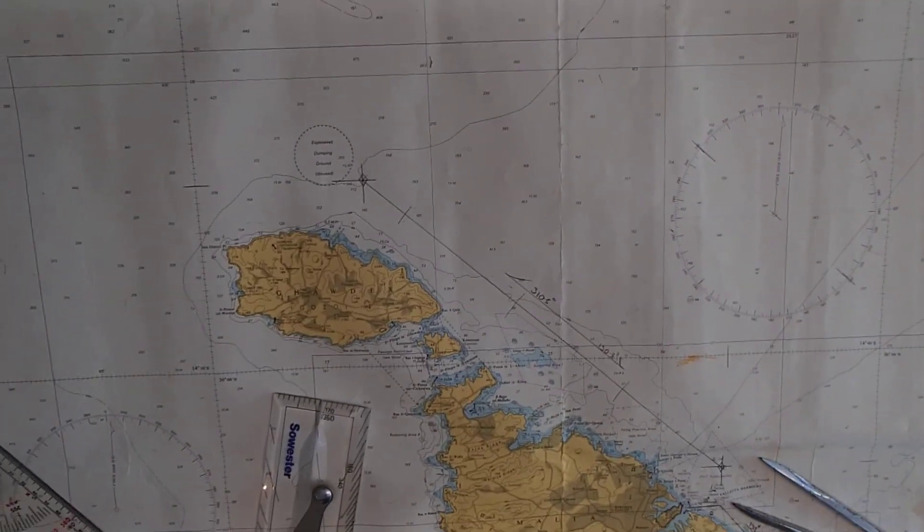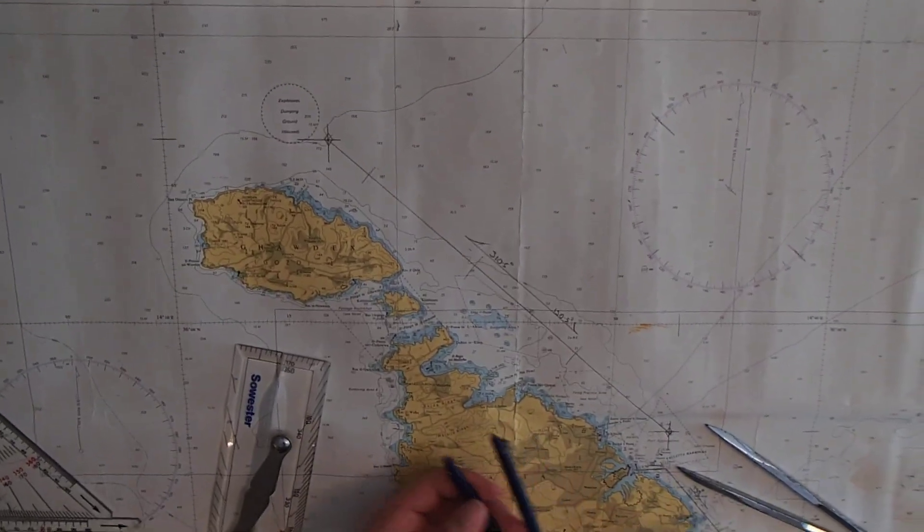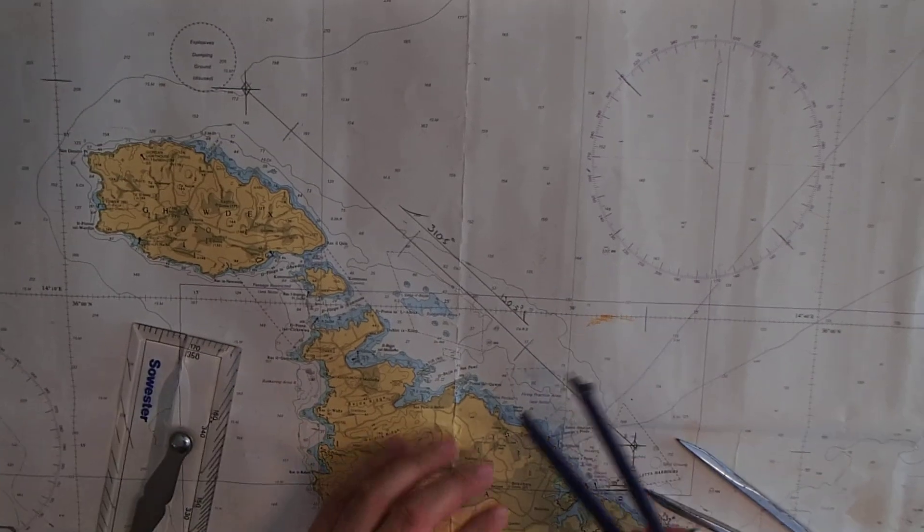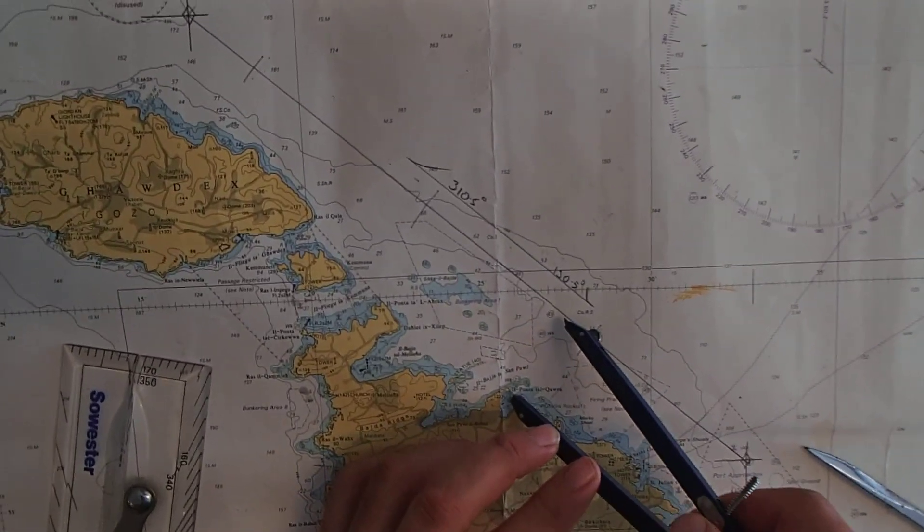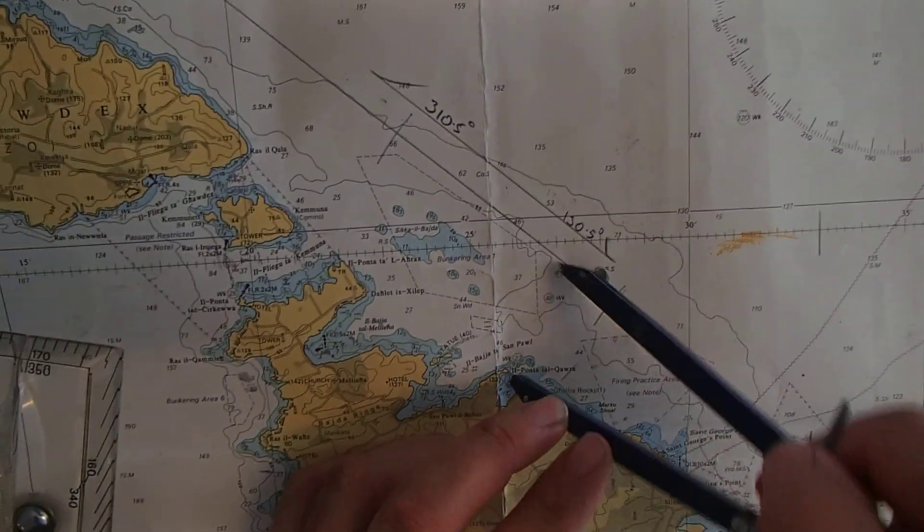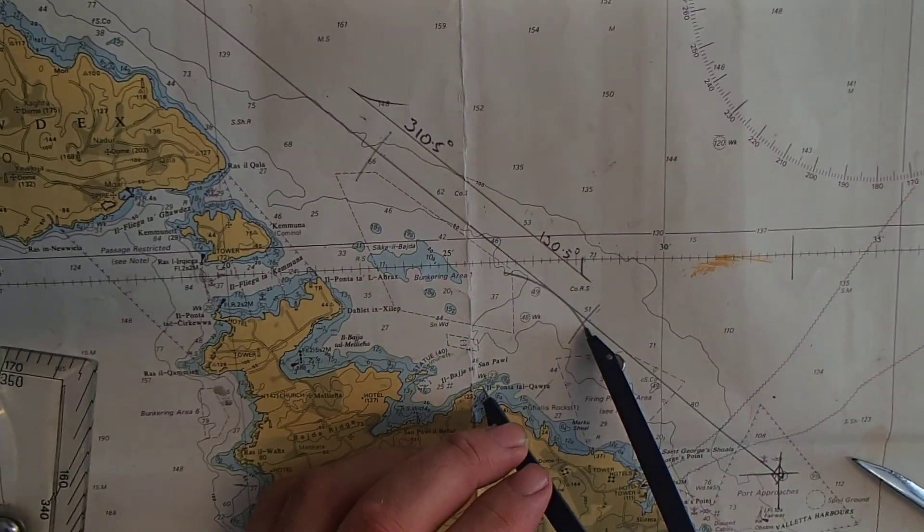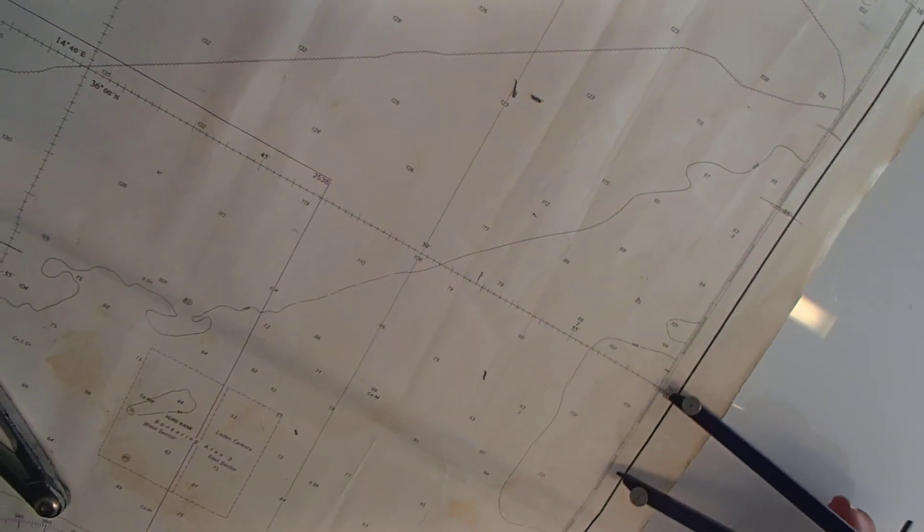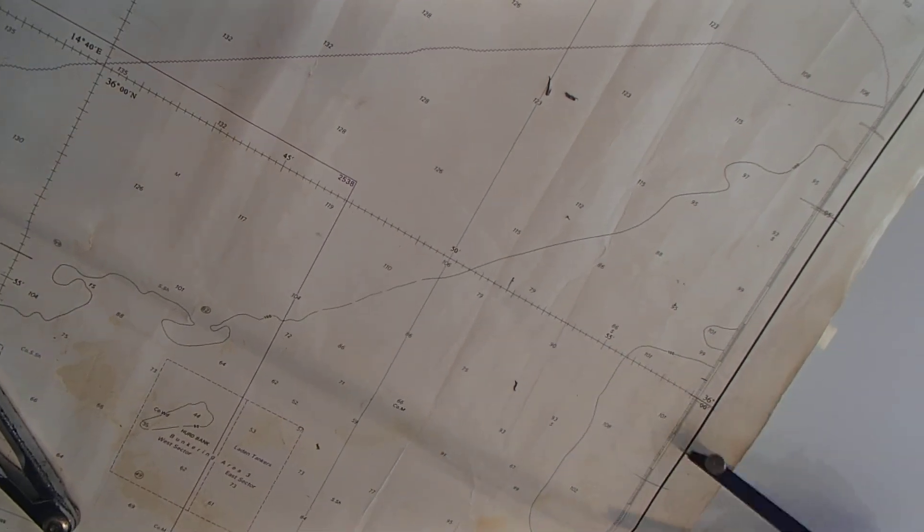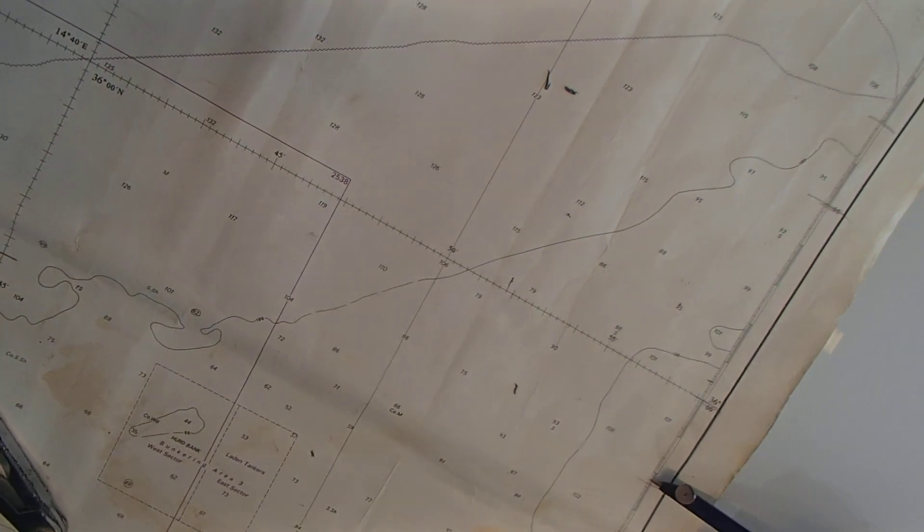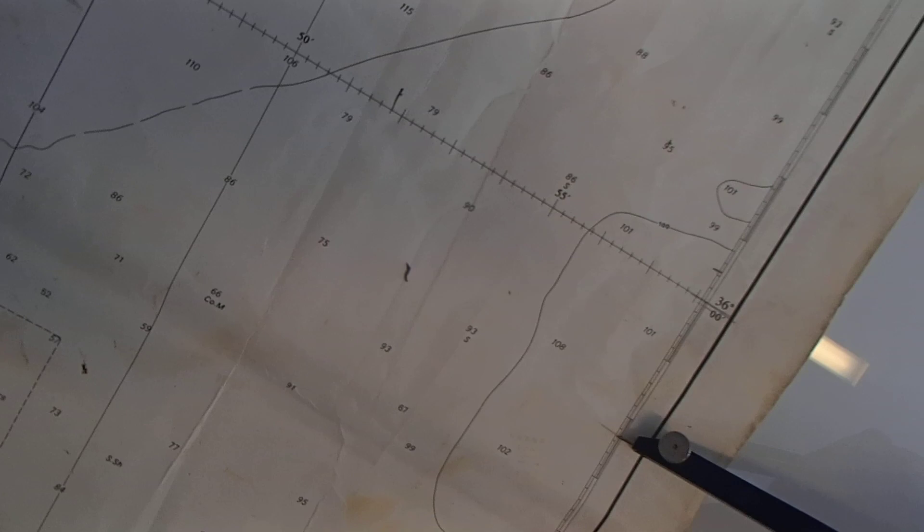The other thing is with a compass or with a divider you can measure a distance, for example we have here our point from our course line. So that means that from our course line to our point we'll be having a distance of 2.25 nautical miles.